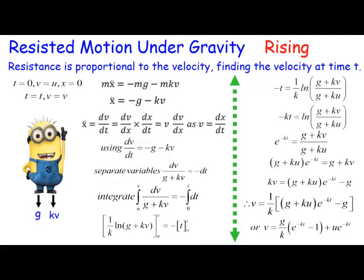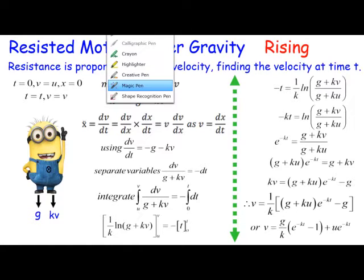The first thing to do is write down the net force which is mass times acceleration or mx double dot, and that equals the other forces which are acting on it. But notice they're acting in the opposite direction, that's why they're negative: minus mg minus mkv. Then you divide by m and get x double dot equals minus g minus kv.